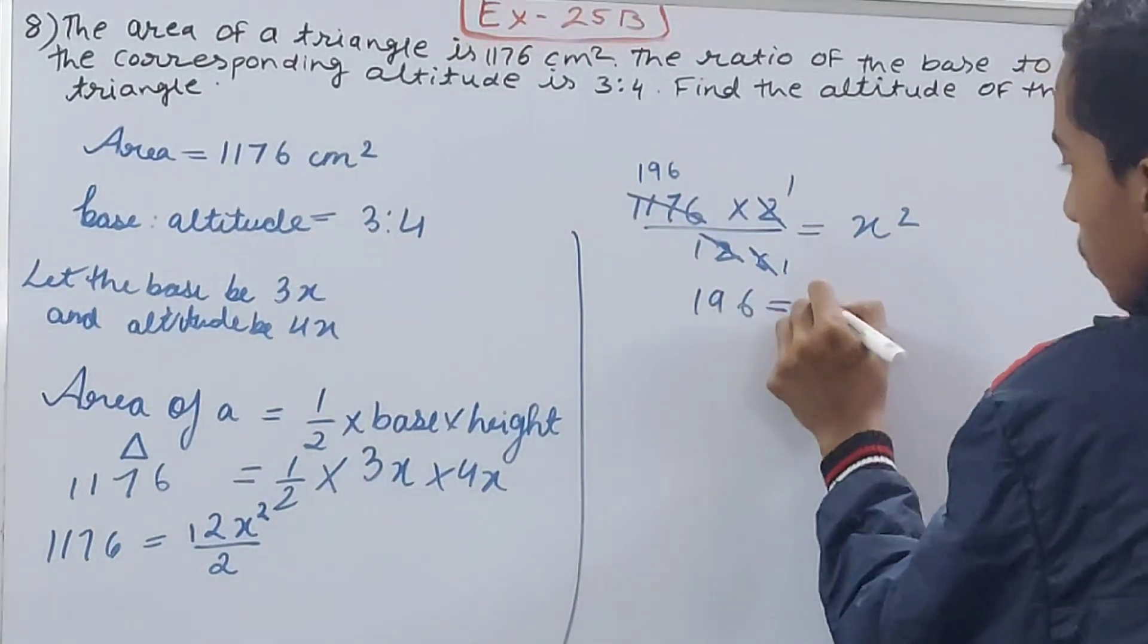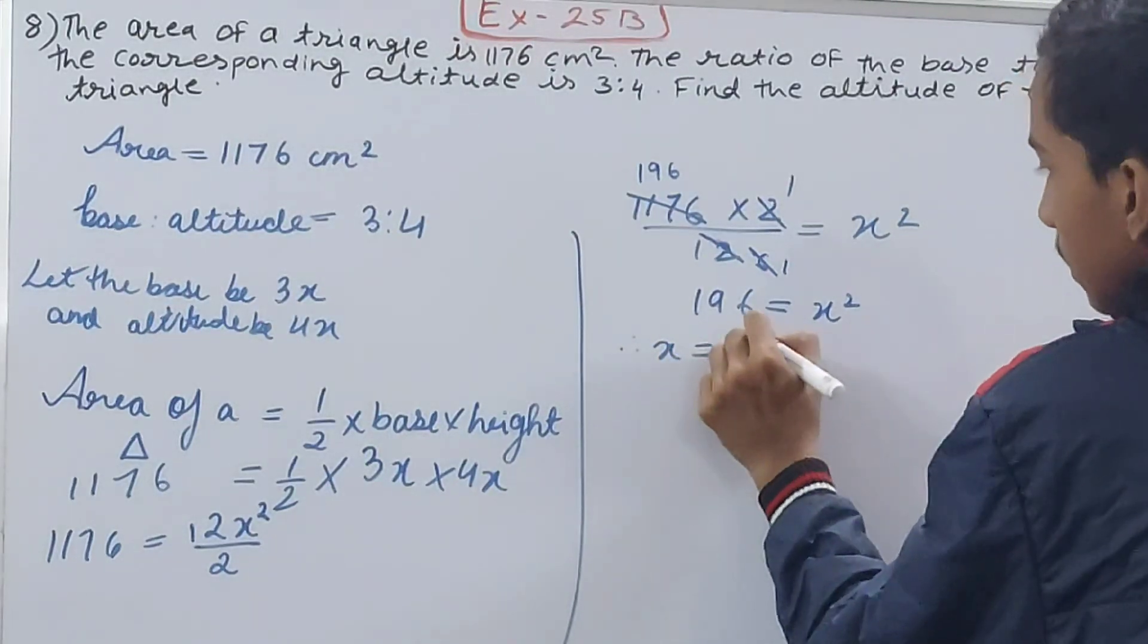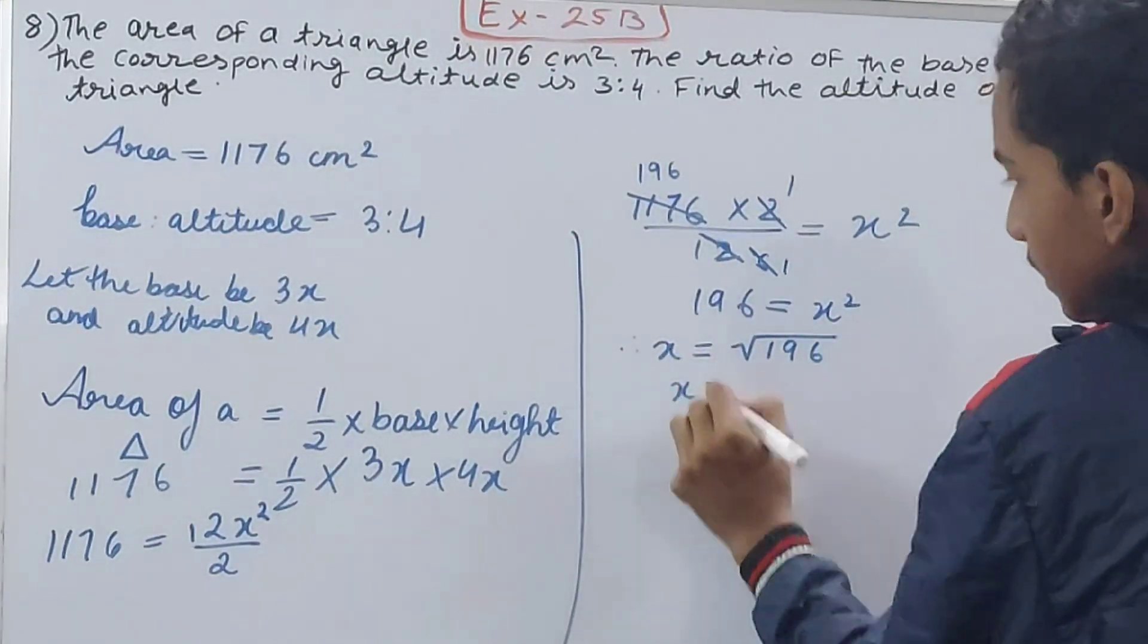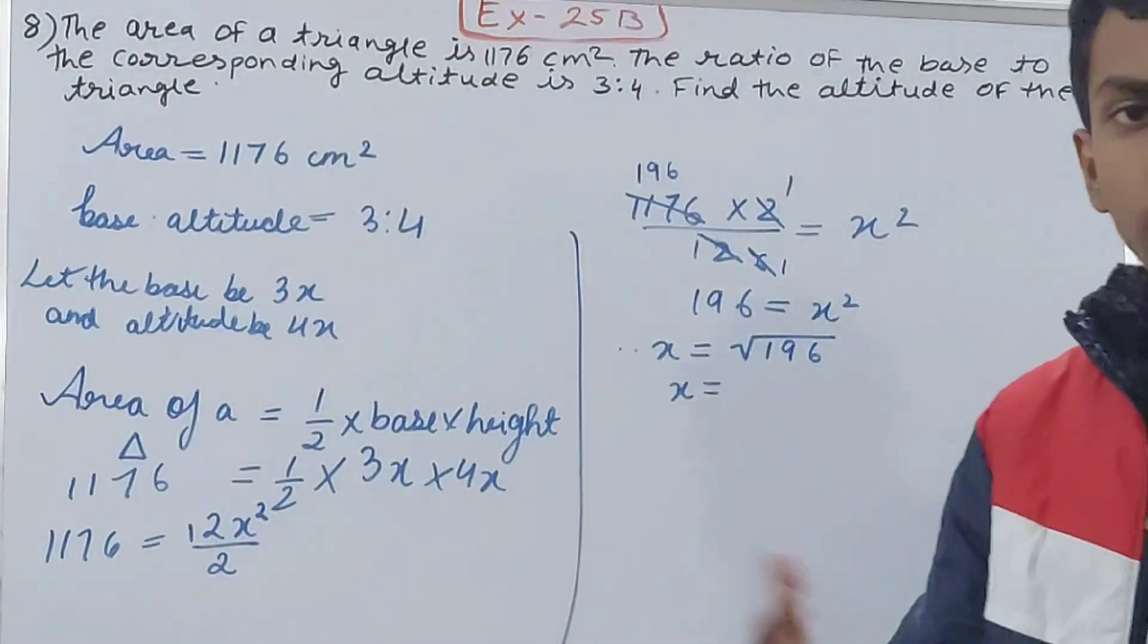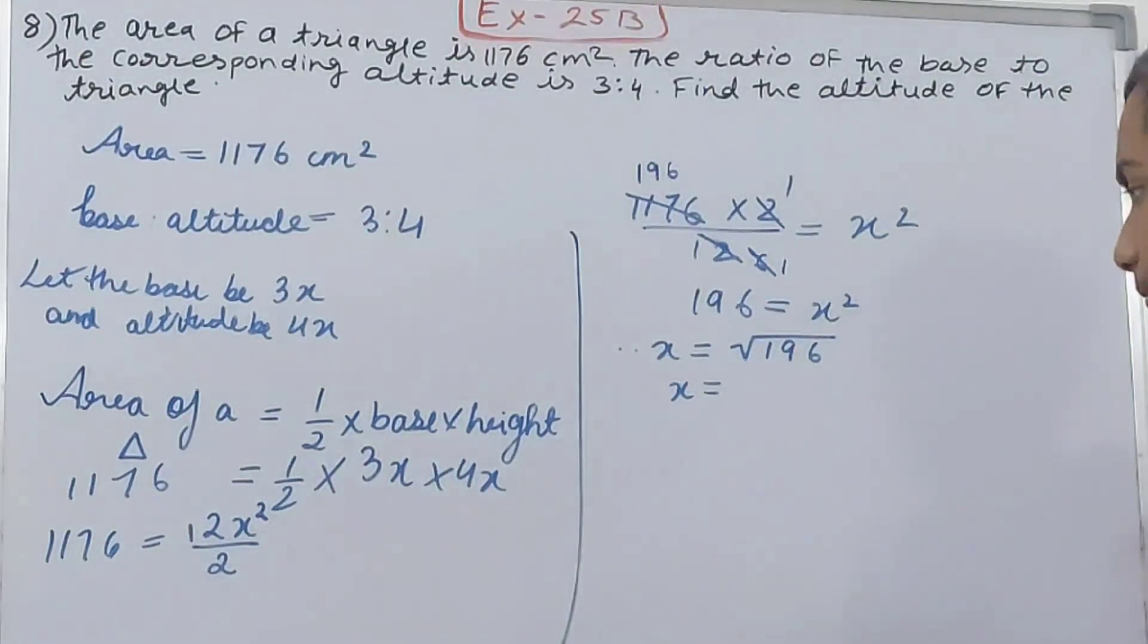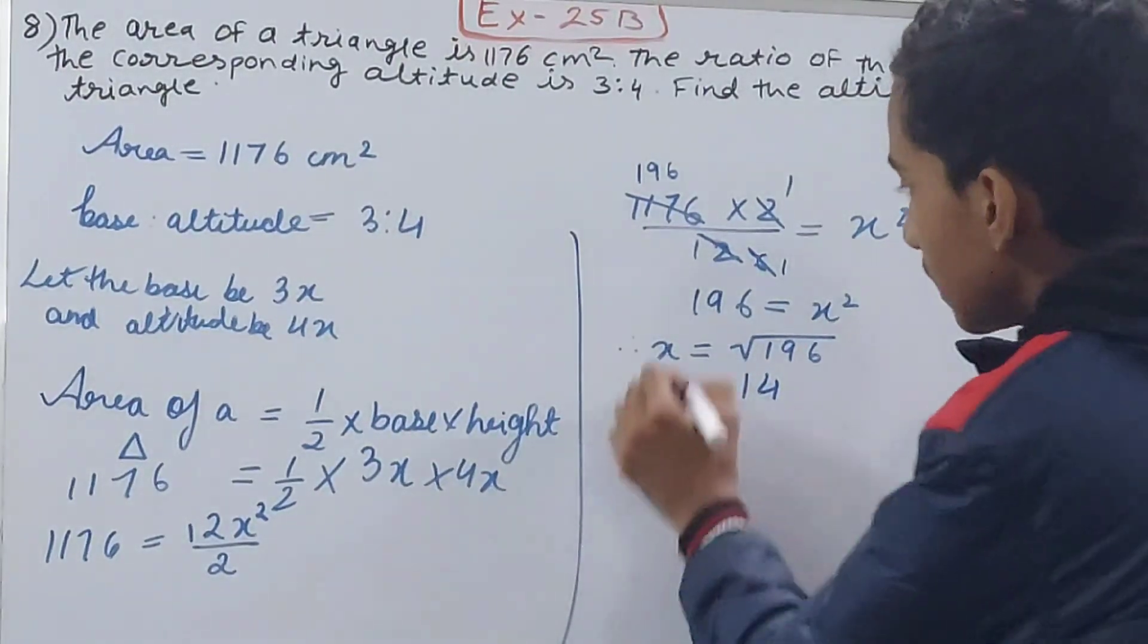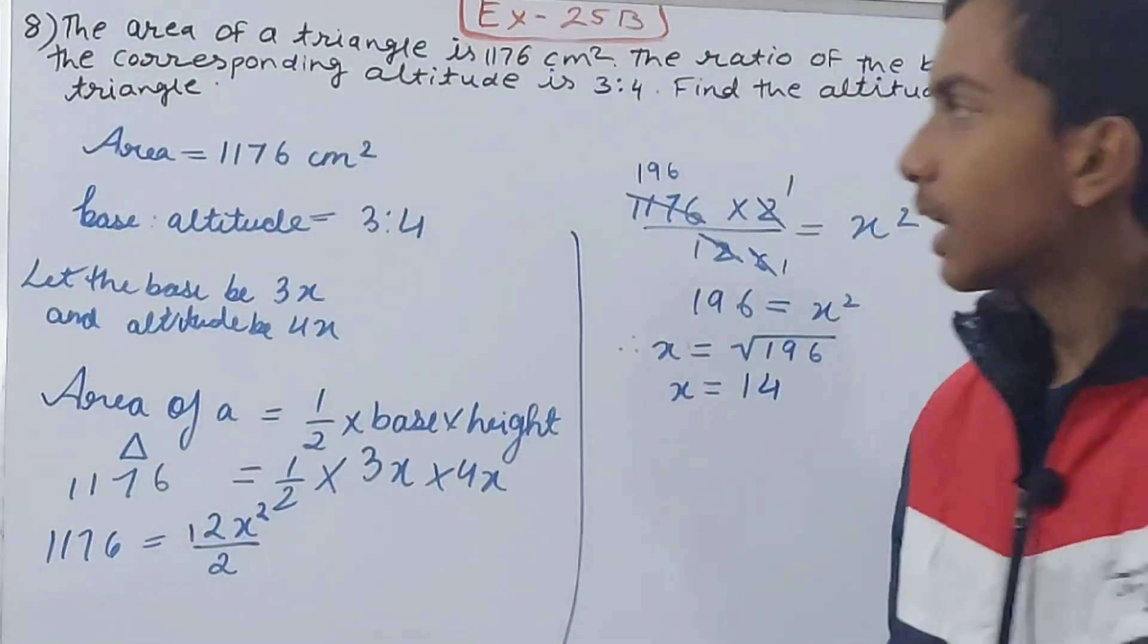So my x is equal to the root of 196. x is the square root of 196. It is the square of which number? That's the square of 14. 14 into 14 is 196, so here I will put 14. x is equal to 14.